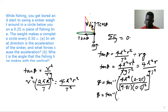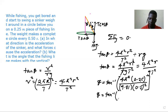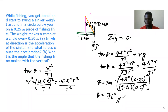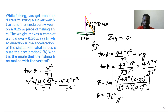Once we calculate all of that, we get theta equal to 76 degrees. So that is how we calculate the angle theta which the fishing line makes with the vertical — theta is 76 degrees.